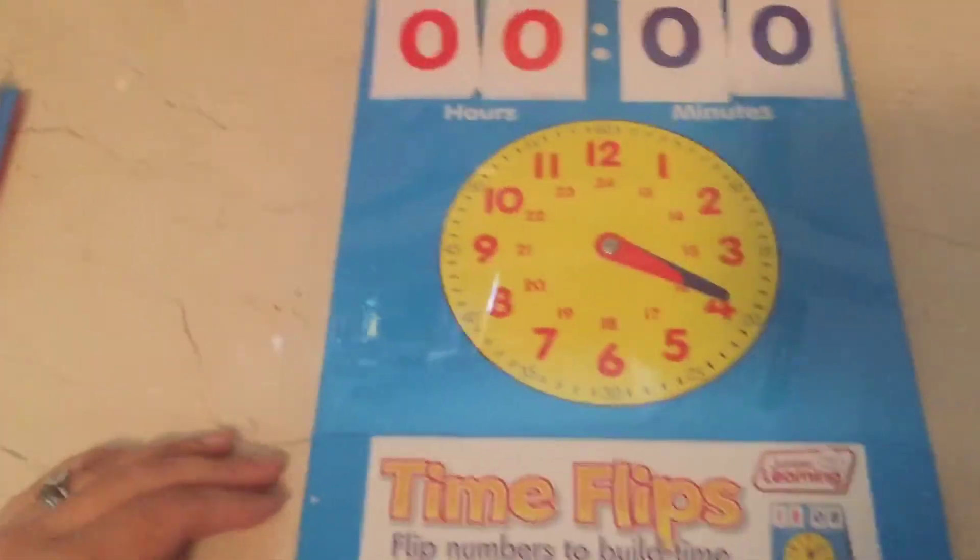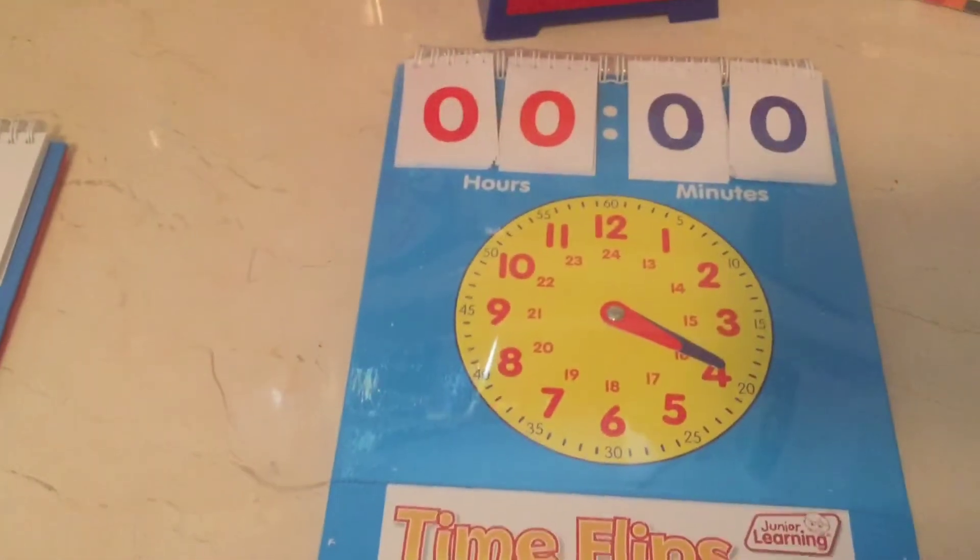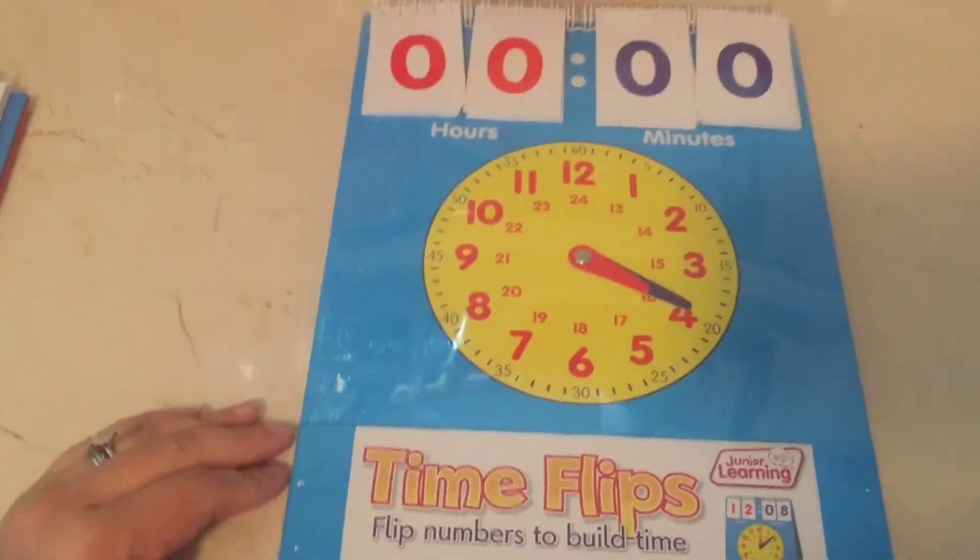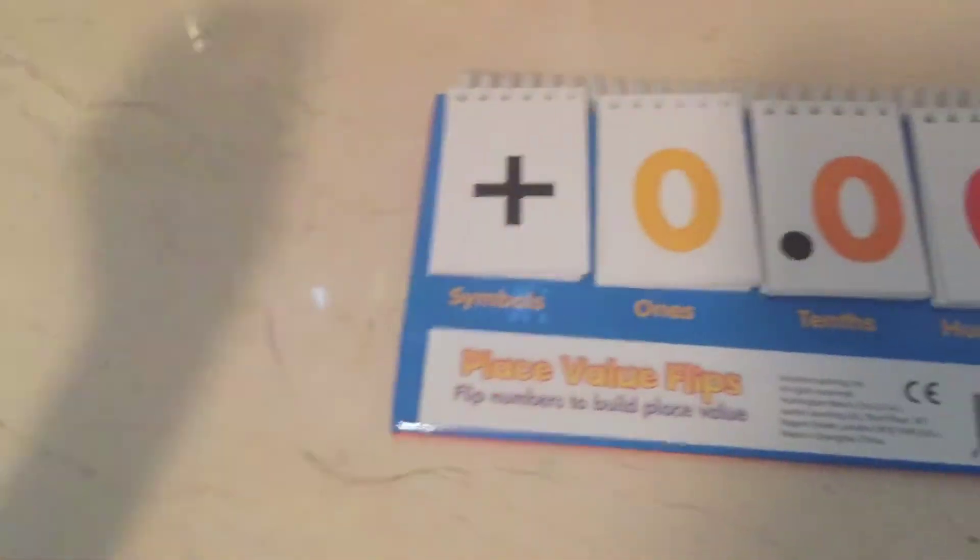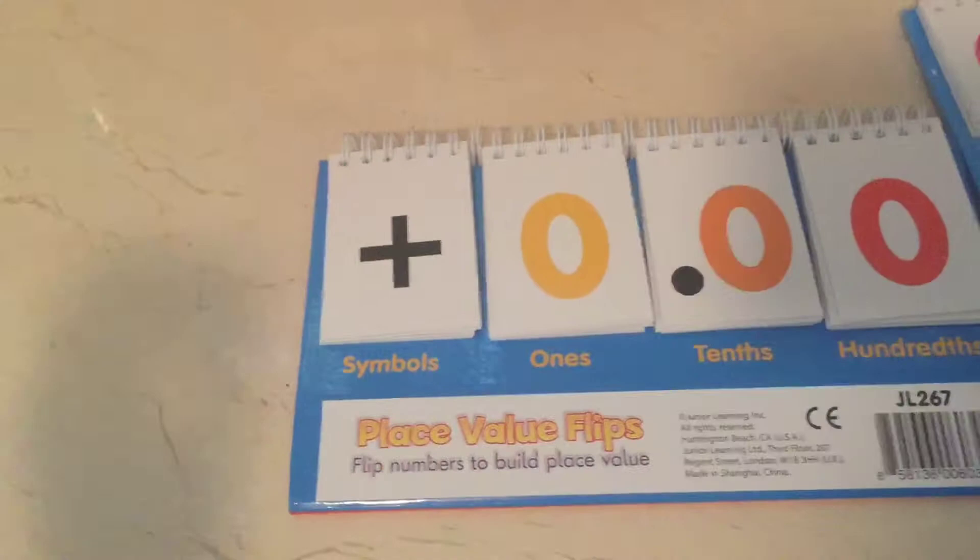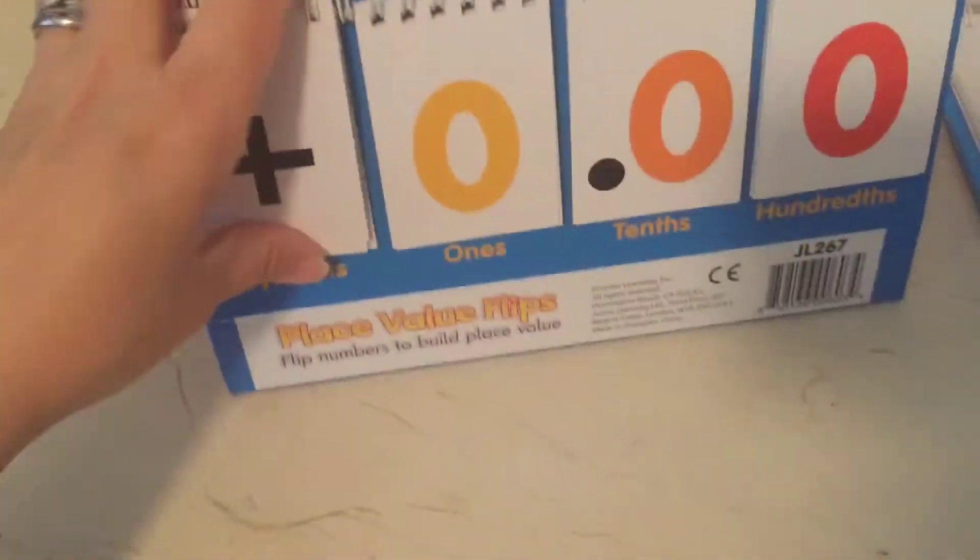I also purchased this time flip, this clock demonstration that sits up on the table like this and it's really good for time activities, for demonstration things like that. I got another chart that's a place value flip chart, it's good when we're working with money and place value in general. It stands up on the table as well.